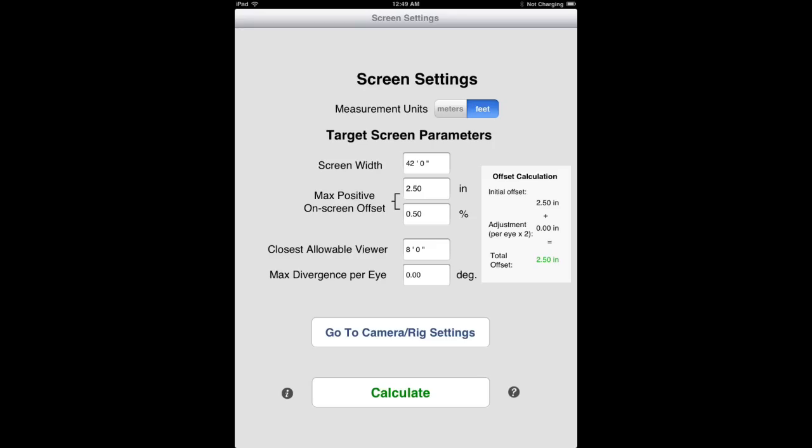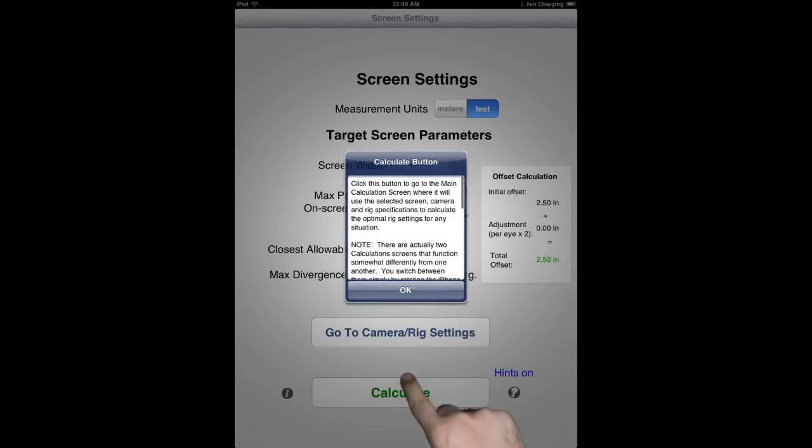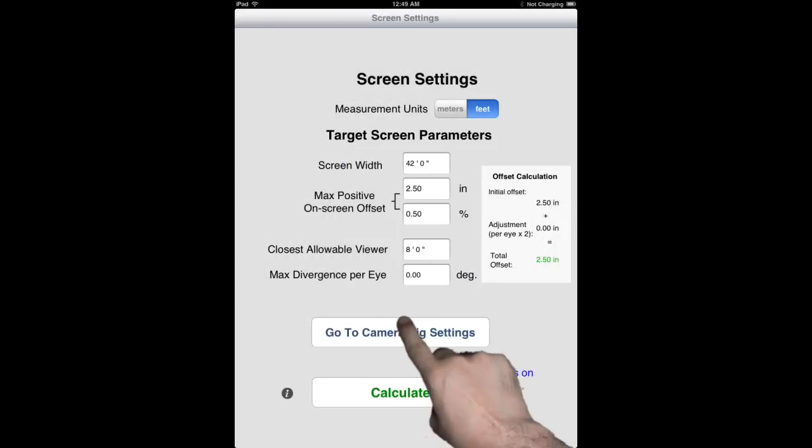If you want help on several controls or fields, simply double tap the hint button and it will stay locked on and you can get help for as many on-screen items as you desire. When you're done, tap it again to return the app to its normal functioning.